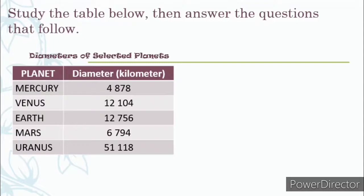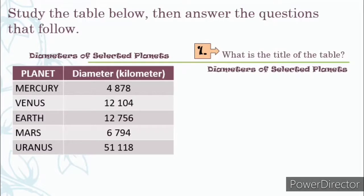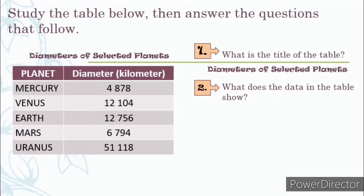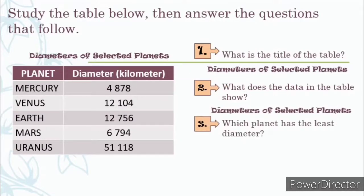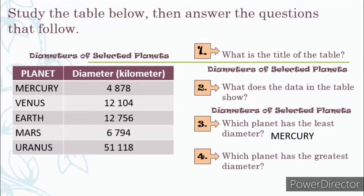Let's answer the questions. Number 1: What is the title of the table? Based from the table, the title is — very good! — Diameters of Selected Planets. Number 2: What does the data in the table show? Absolutely! The table shows the diameters of selected planets. Number 3: Which planet has the least diameter? The planet with the least diameter is — very good! — Mercury, having 4,878 km. Number 4: Which planet has the greatest diameter? Very good! It's Uranus with 51,118 km.